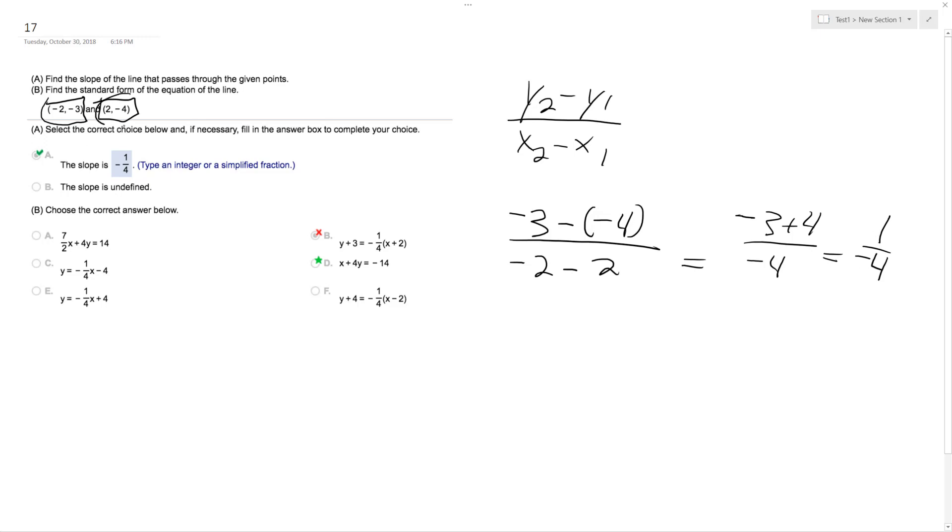Alright, so what I do is I can just pick a point and use the point slope form, y minus y1 equals m times x minus x1.